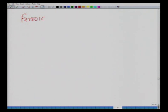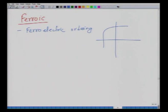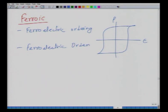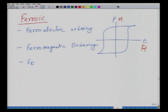A ferroic material is one that has ferroelectric ordering — coupling of polarization and electric field shown in a P vs E plot. Ferromagnetic ordering involves coupling between magnetization and magnetic field. Ferroelastic ordering is coupling between stress and strain. These three ordering states are individually called ferroic orderings, and materials exhibiting them are called ferroic materials.